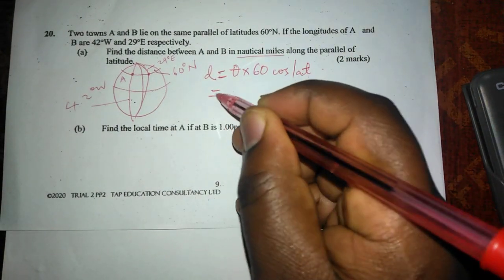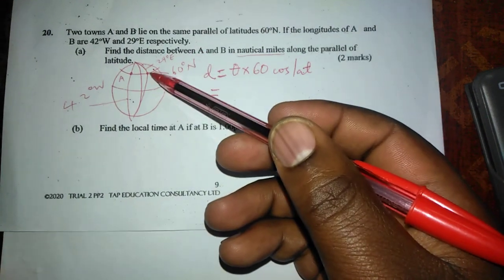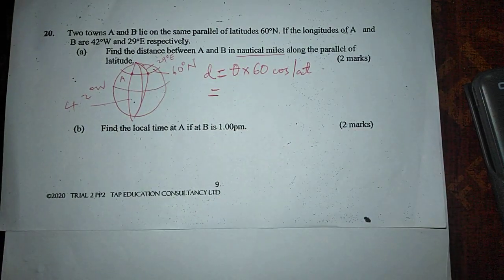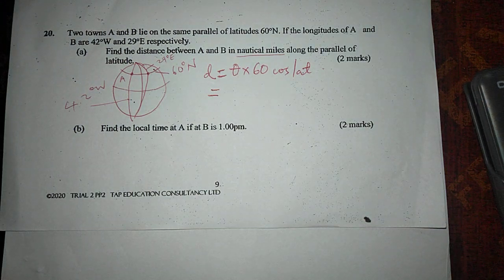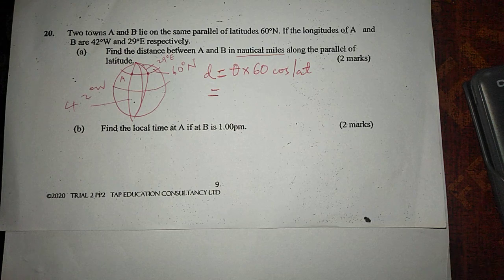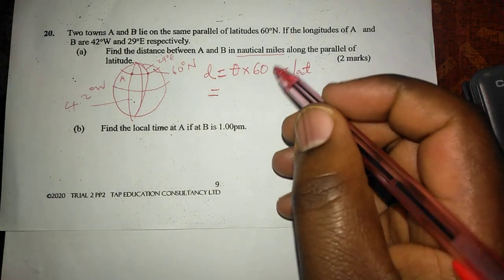Therefore, the theta is the longitude difference. From 29 in the east to 42 in the west, the difference will be when we add 42 and 29, and this gives us 71.